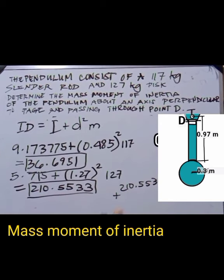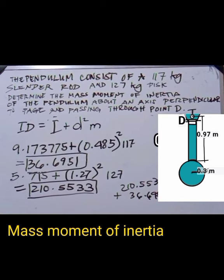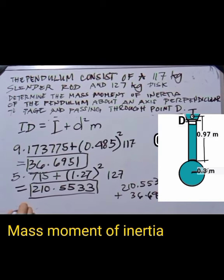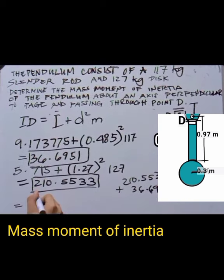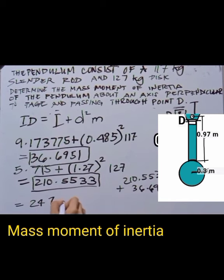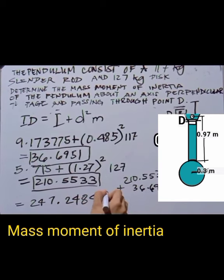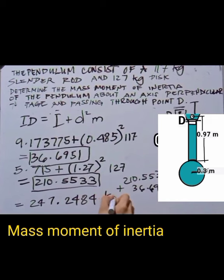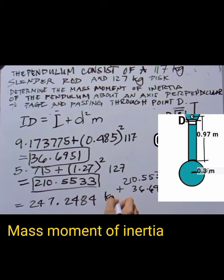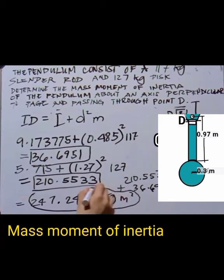Summing the two contributions: 210.5533 + 36.6951 = 247.2484 kg·m².